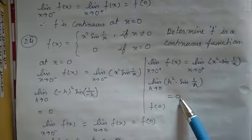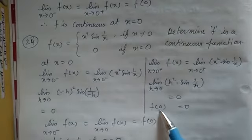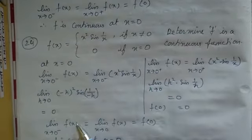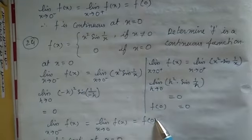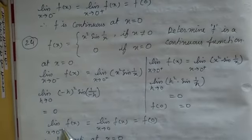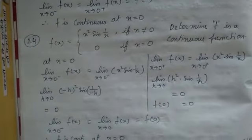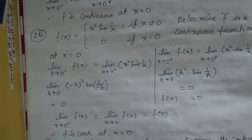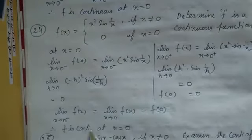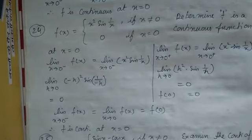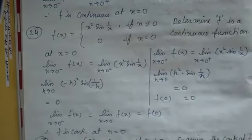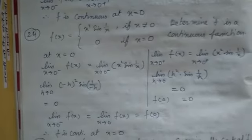And f(0) is already given as 0. So the left-hand limit, right-hand limit, and f(0) are all equal to 0. Therefore, f is continuous at x = 0. Please watch the video and note down both solutions.